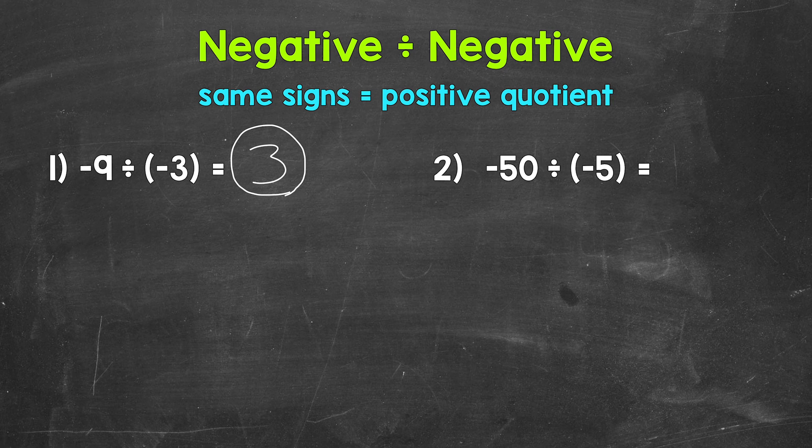Now I like to picture and think through this as dividing negative 9 into groups of negative 3. In other words, how many groups of negative 3 are in negative 9? Or think about how many negative 3's can we pull out of negative 9? Well, 3 negative 3's. Again, our final answer, a positive 3.